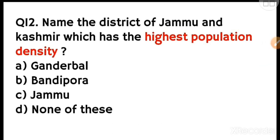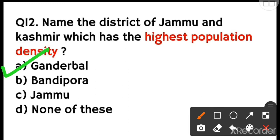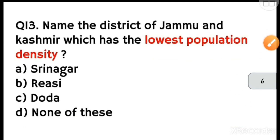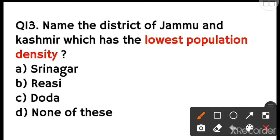Next: which district of Jammu and Kashmir has the highest population density? The overall population density of Jammu and Kashmir is 56 per square kilometer. Options are Gandhrabal, Bandipura, Jammu, or none of these. Gandhrabal has the highest population density. For the lowest population density, the options are Srinagar, Reasi, Doda, or none of these. Doda has the lowest population density — option C is correct.